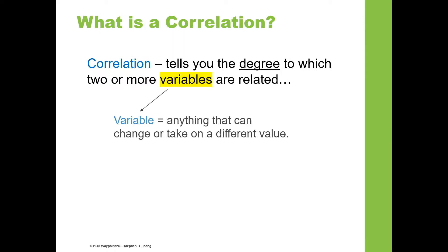You may be wondering what variables are. A variable is anything that can change or take on a different value. Let me give you some examples. Height is a variable because individuals can differ on how tall they are. Weight is also a variable because individuals can vary in their weight. Intelligence is a variable that changes or differs across different individuals.